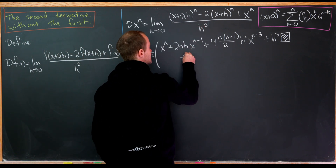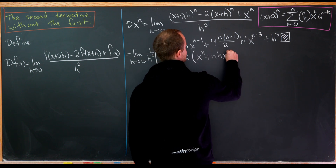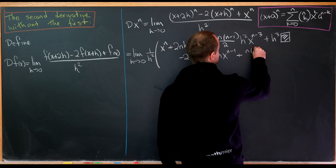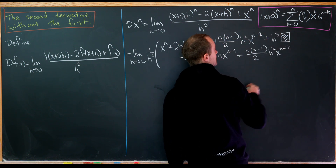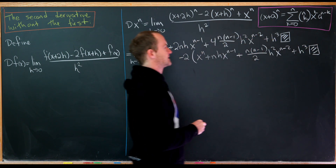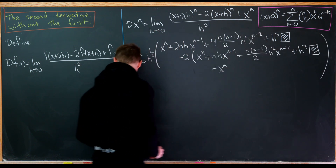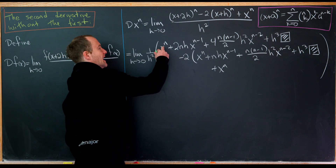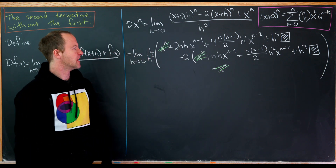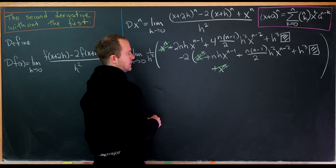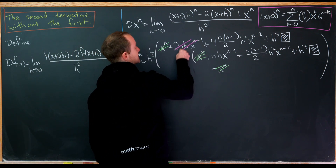Next we subtract 2 times the expansion of (x + h)^n: that gives minus 2x^n minus 2nh·x^(n−1) minus n(n−1)·h²·x^(n−2), plus h³ terms. Then we add x^n from the final term. The x^n terms cancel (x^n − 2x^n + x^n = 0), and the nh·x^(n−1) terms also cancel.